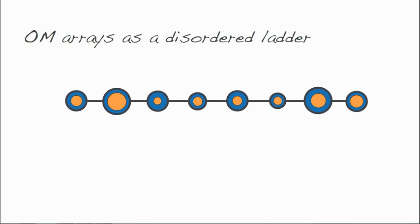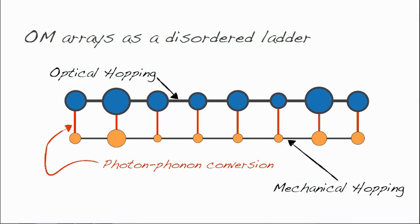The relevant interactions in a 1D array are sketched in the ladder diagram. Photons and phonons can hop between neighboring cells. In addition, on each site, photons can be converted into phonons and vice versa. This interaction is mediated by an appropriately tuned laser.